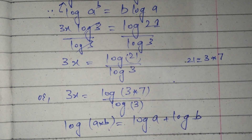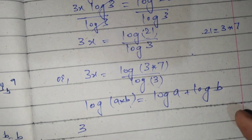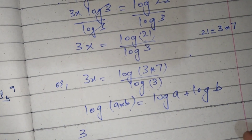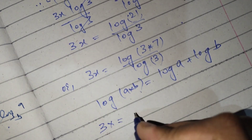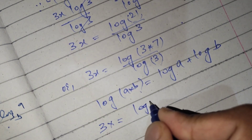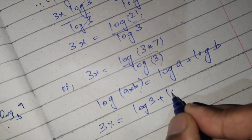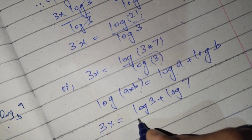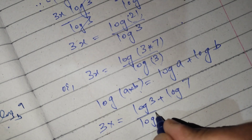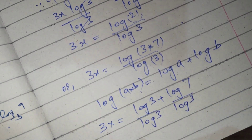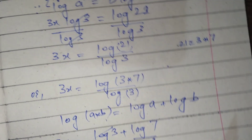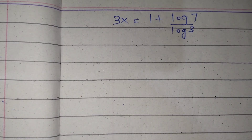So it now becomes 3x equals log of 3 plus log of 7, all divided by log of 3. Log 3 divided by log 3 cancels, so it becomes 3x equals 1 plus log 7 divided by log 3.